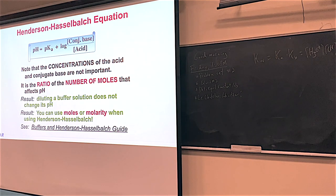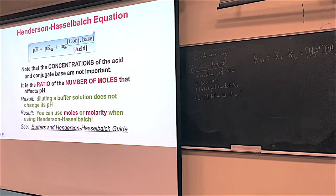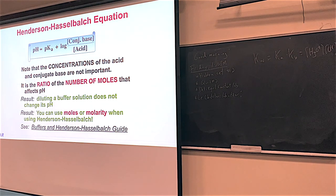The acid and bases will be conjugates of each other. They have to be weak acids and bases — you can't have strong acids and strong bases. As an example, you could have ammonia and ammonium, or acetic acid on the bottom and acetate on the top. But you wouldn't want to have acetate and ammonium — those aren't conjugates of each other. Also, you don't want anything with a strong acid or strong base.